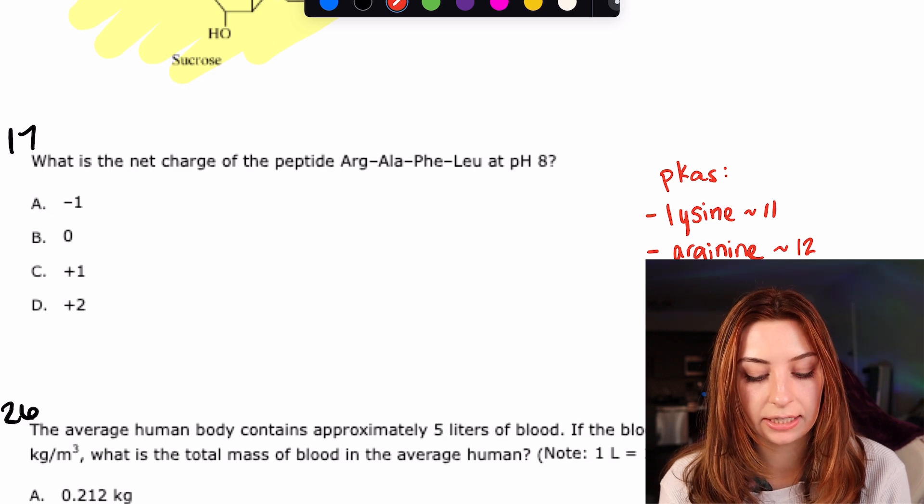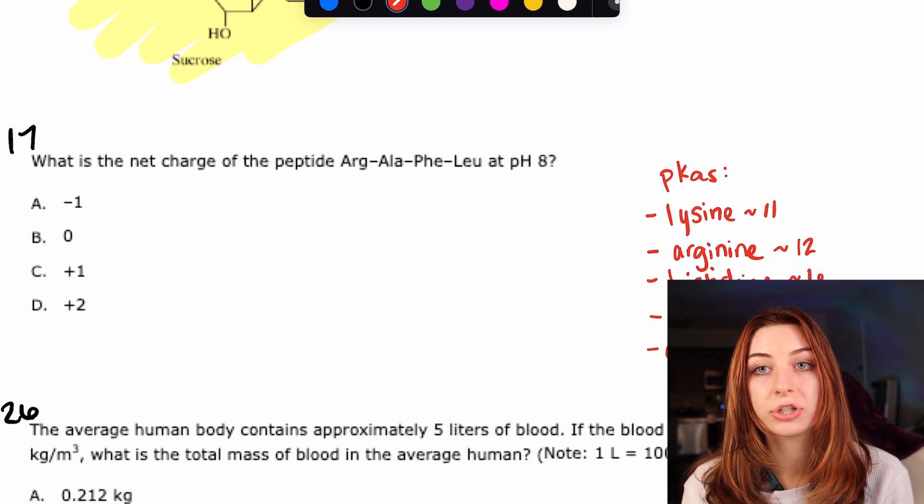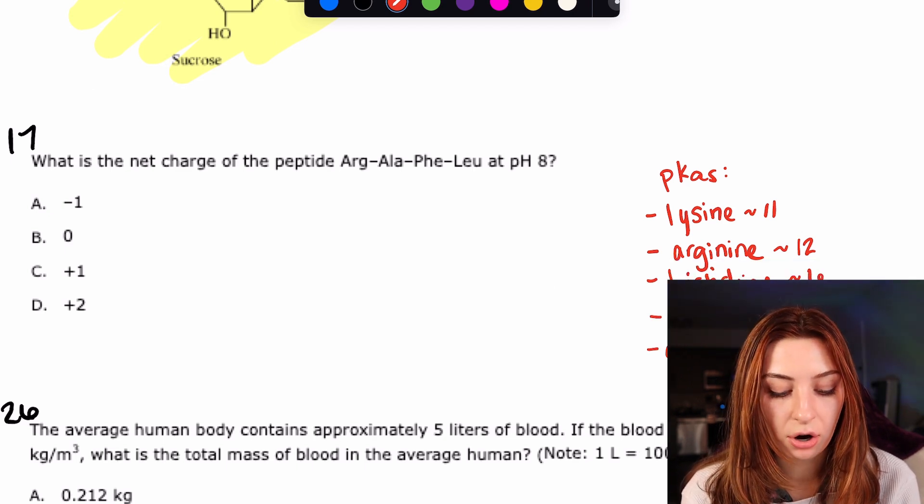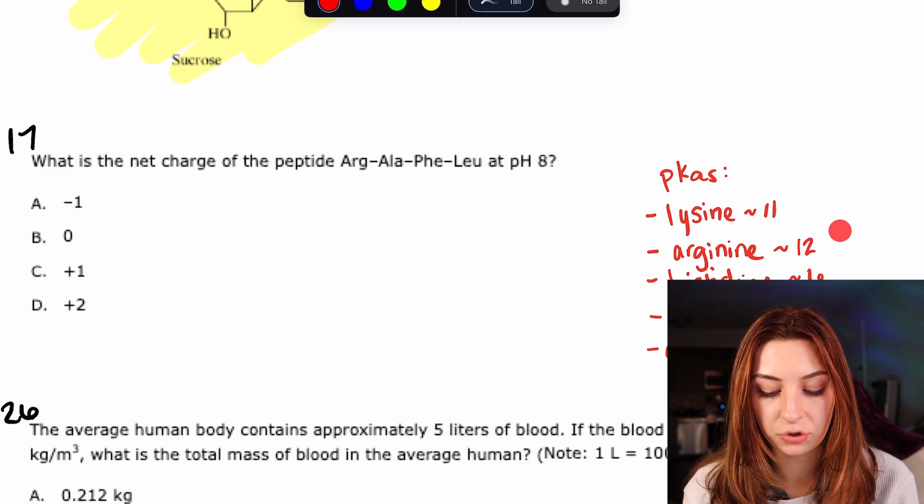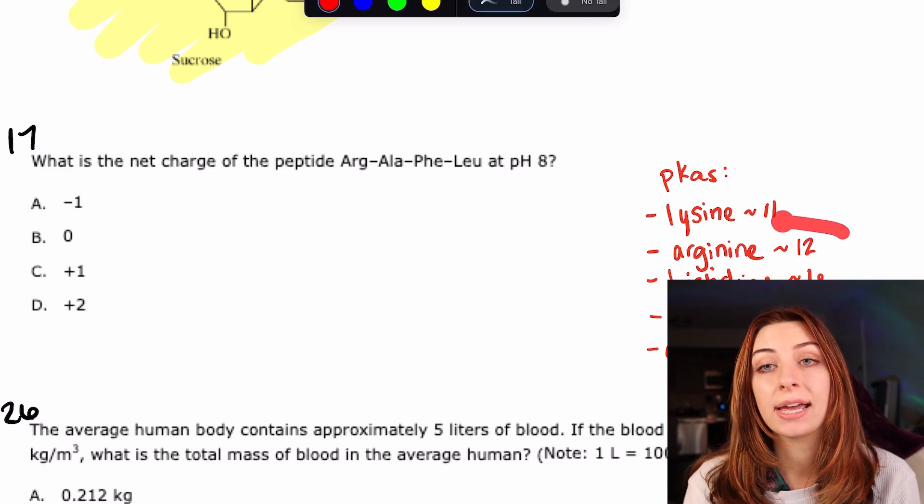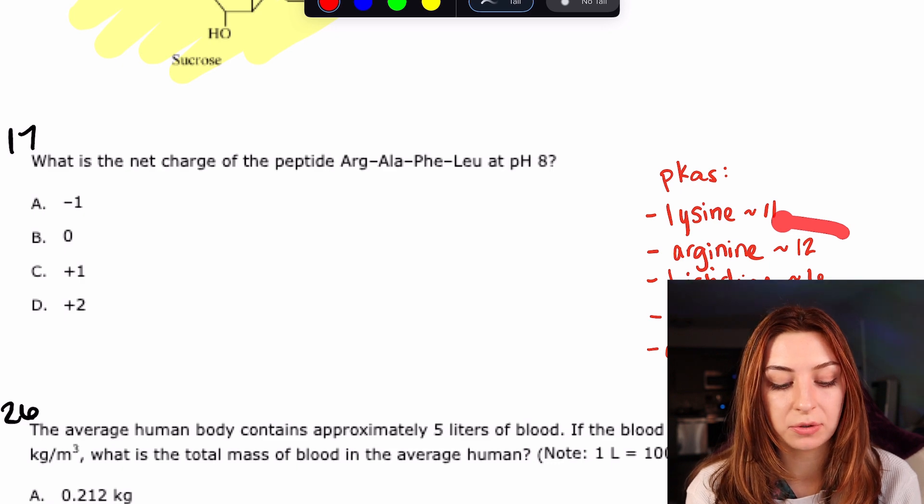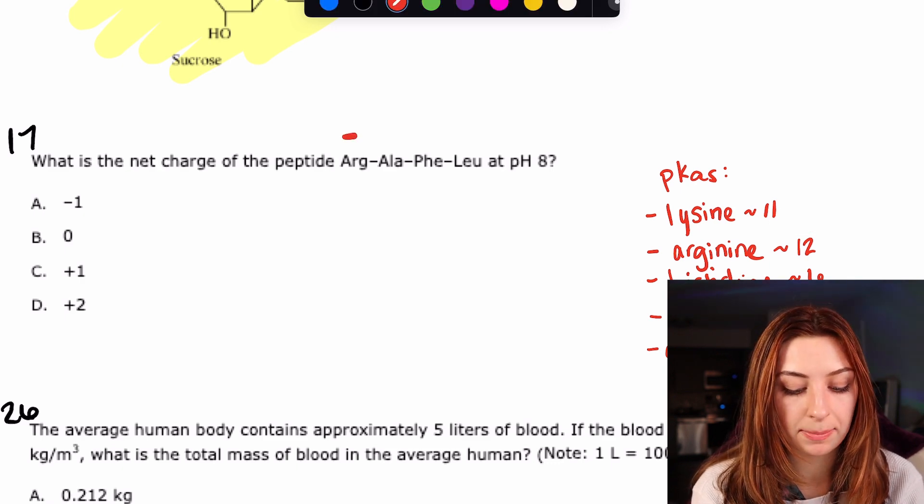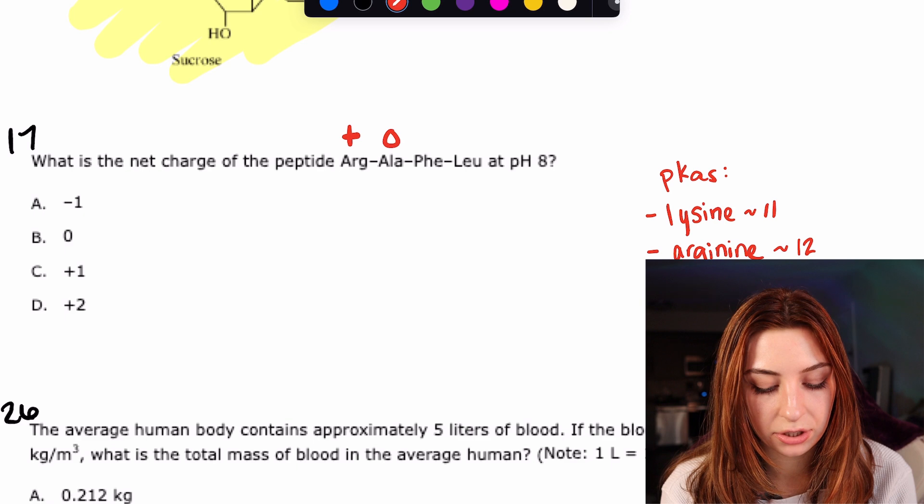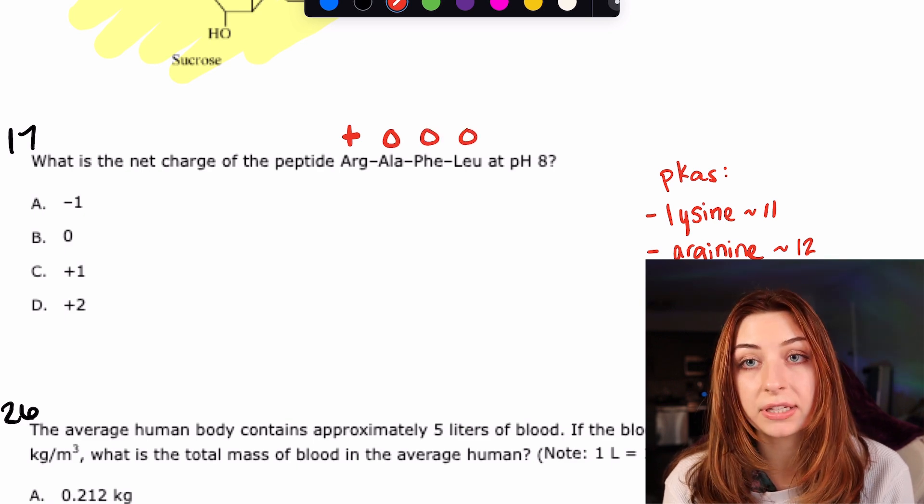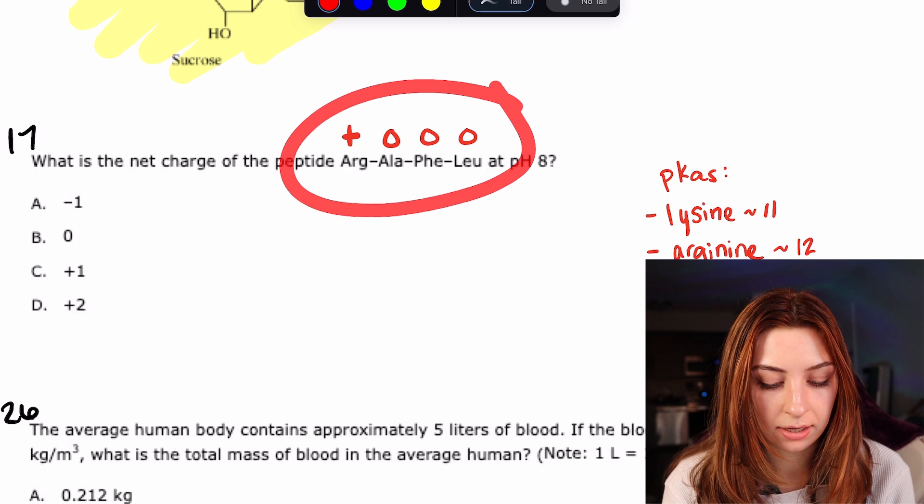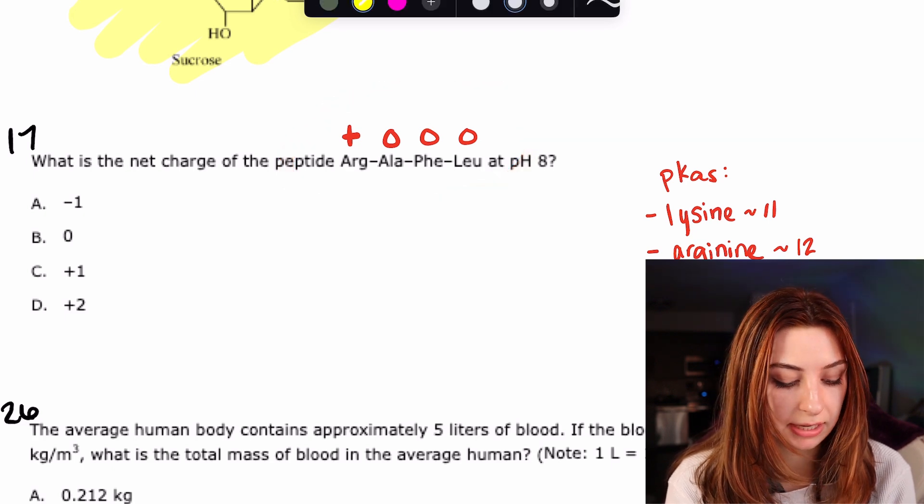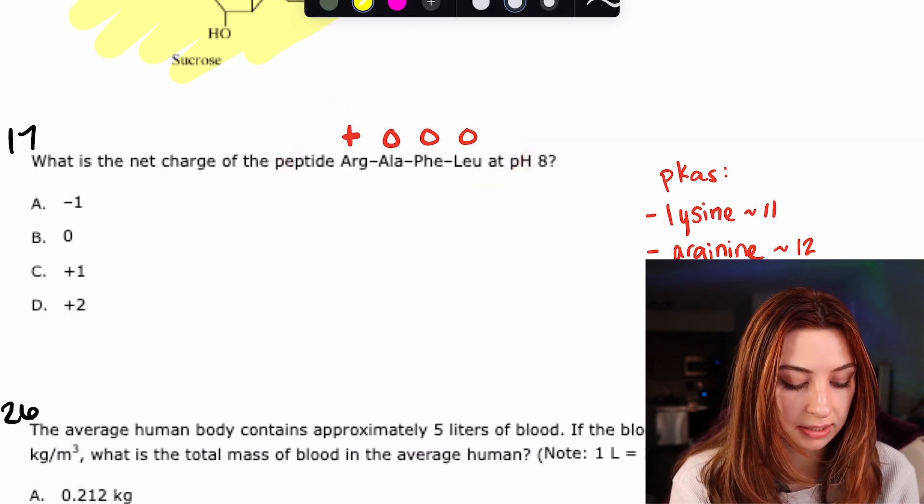Okay here we go. We have an arginine, alanine, phenylalanine, and leucine. So what are the charges going to be at a pH of 8. Arginine is a basic amino acid and it's got a pKa of 12. So at pKa's below 12 it is going to be protonated and therefore it's going to have a positive charge. Alanine is going to have a neutral charge as is phenylalanine and leucine and so the overall charge of this oligopeptide at a pH of 8 is going to be positive 1.